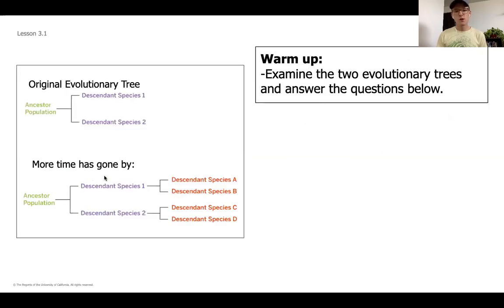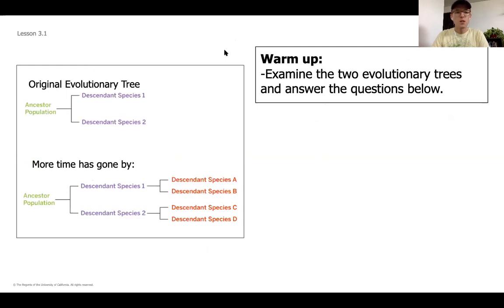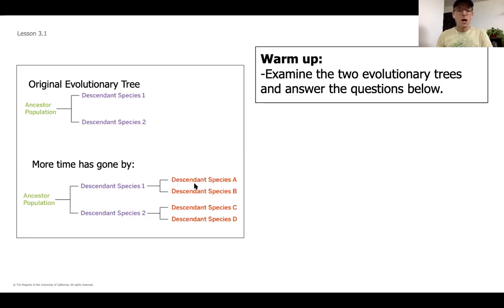I hope that review was helpful to ground yourself in what we know so far. As scientists, I always try to remind my students that it's okay to not know everything — we want to push ourselves to predict or create hypotheses and question what's going on. In the warm-up, I'm going to push you to think about things you have not learned yet. You're going to be making predictions based on two evolutionary trees over here.